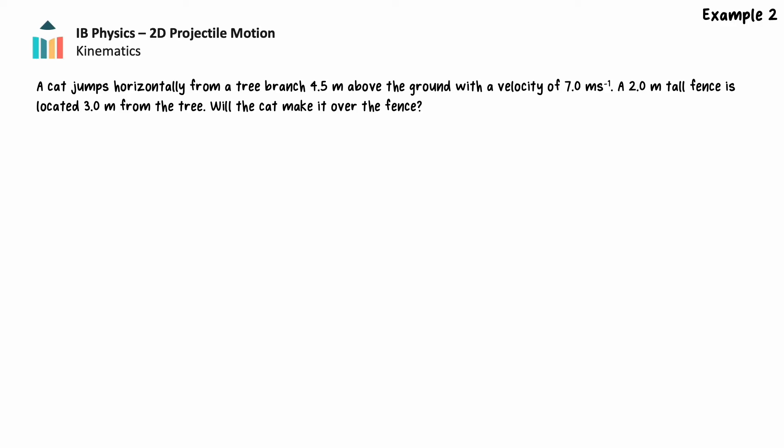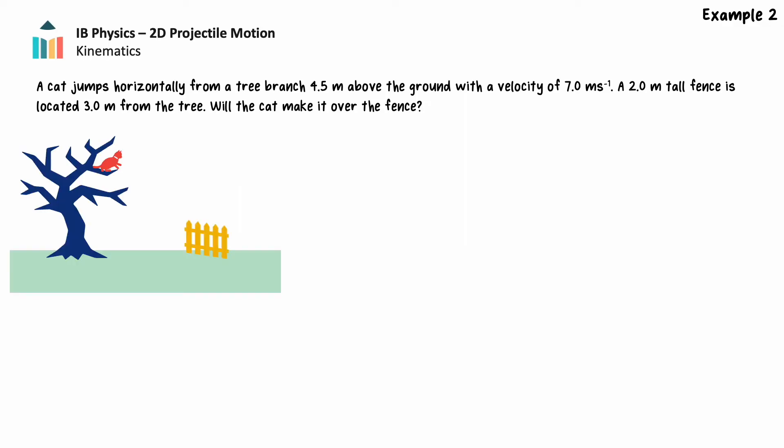Let's consider another example — this time a more applied example similar to questions you may encounter on an IB exam. A cat jumps horizontally from a tree branch 4.5 meters above the ground with a velocity of 7 meters per second. A 2.0 meter tall fence is located 3.0 meters from the tree. We must determine if the cat will make it over the fence during his jump. We'll start with a labeled diagram — we have a lot of information, so we'll need to determine what we're being asked in order to best determine how to solve this problem.